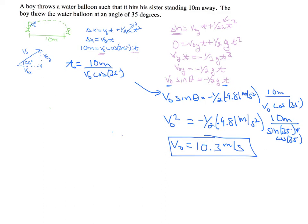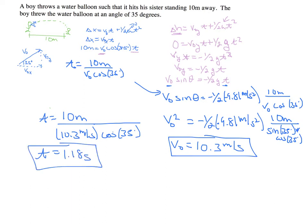With that information, I can then go back here and find the time. So 10 meters over 10.3 meters per second times the cosine of 35. I plug that into my calculator: 10 divided by 10.3 times cosine 35. I get the time is about 1.18 seconds, which seems like a reasonable amount of time for a water balloon to be in the air. This looks pretty good for solving this problem.